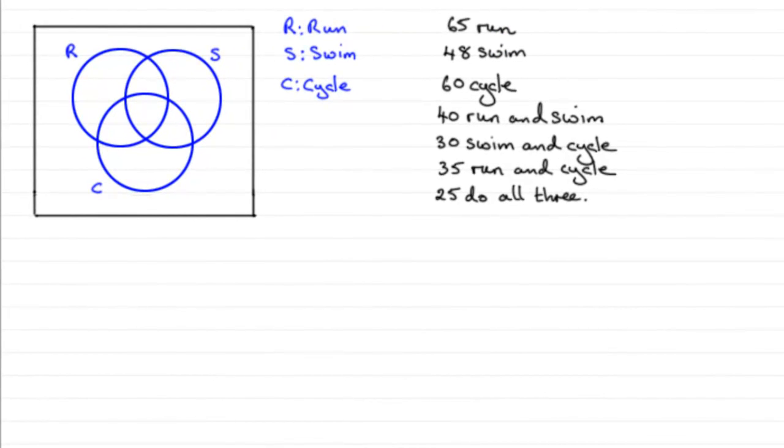Now for this part of the question, we're given the results of a survey of the different types of exercise taken by a group of 100 people, and we've got to draw a Venn diagram to represent these data.